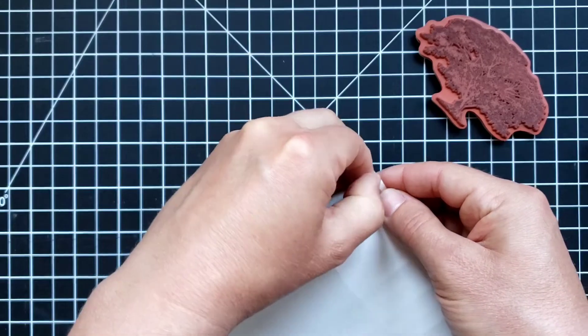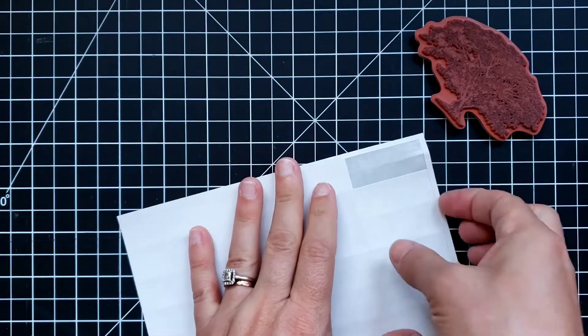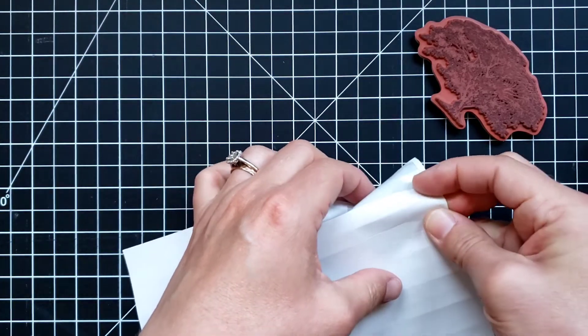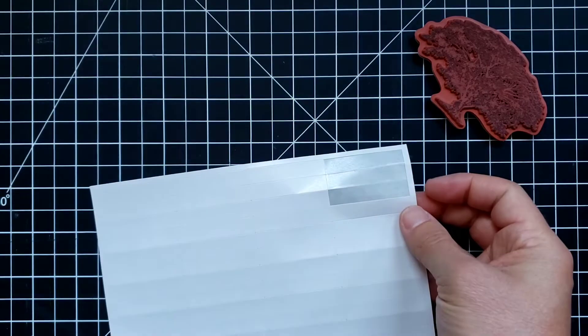Pull the other one off from the center. That way it's going to stay stuck right there. Now we are going to do this again. I'm going to use two strips on this particular stamp since it's pretty large.